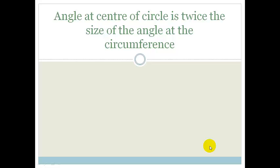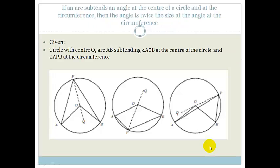The theorem states that the angle at the center of the circle is twice the size of the angle at the circumference. So if you have a circle, the angle at the center is two times the angle at the circumference. You're given a circle with center O, and arc AB which subtends angle AOB at the center and also subtends angle APB at the circumference. 'Subtends' means that the two endpoints of that arc make that angle.